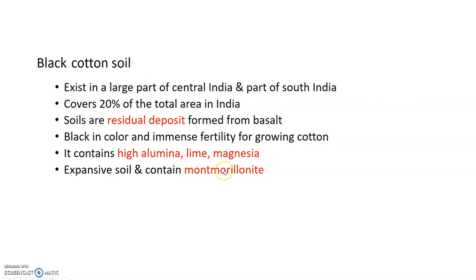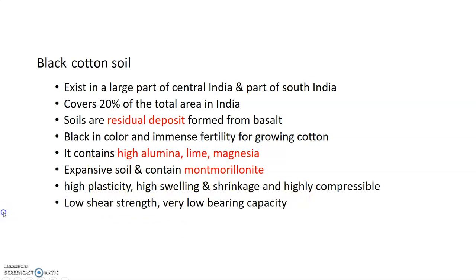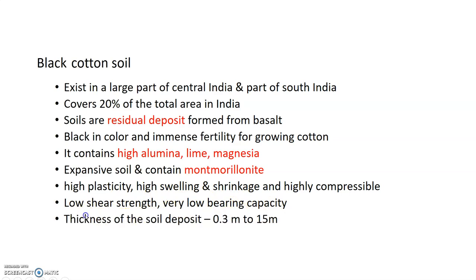Black cotton soil contains clay minerals and is an expansive soil. It has high plasticity, high swelling and shrinkage, and is highly compressible. It has low shear strength and low bearing capacity. Its thickness can be up to 15 meters.